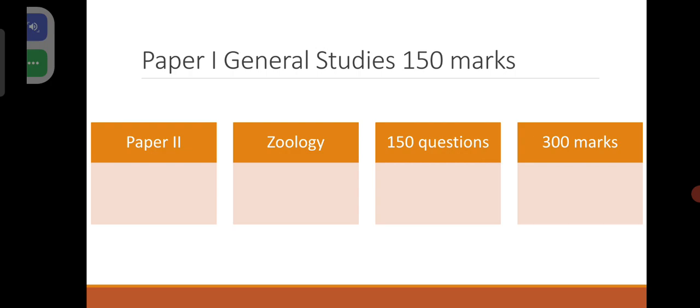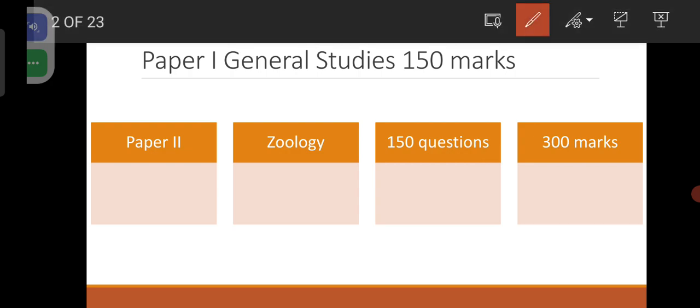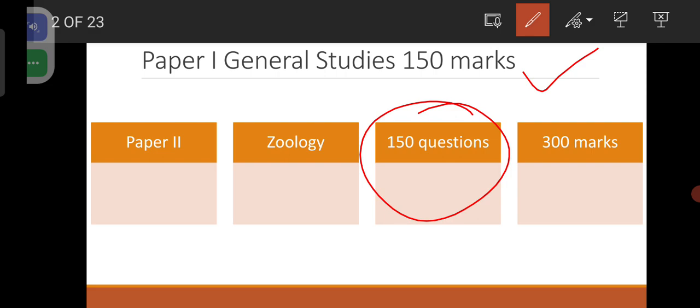Paper 1 will be in General Studies, for 150 marks. Paper 2 for the aspirants of Zoology — the Zoology questions will be asked up to PG level along with the basics. The questions will be 150 questions and each question carries 2 marks, meaning 300 marks will be the total score.